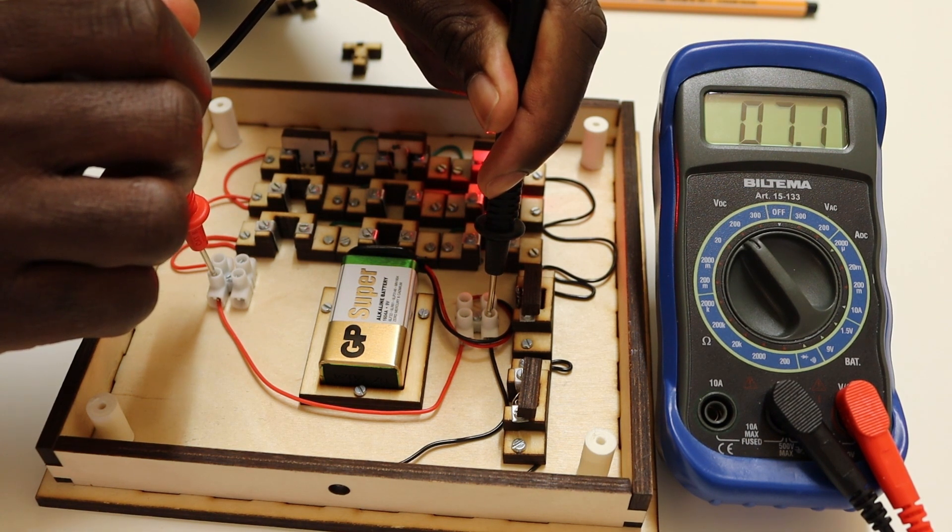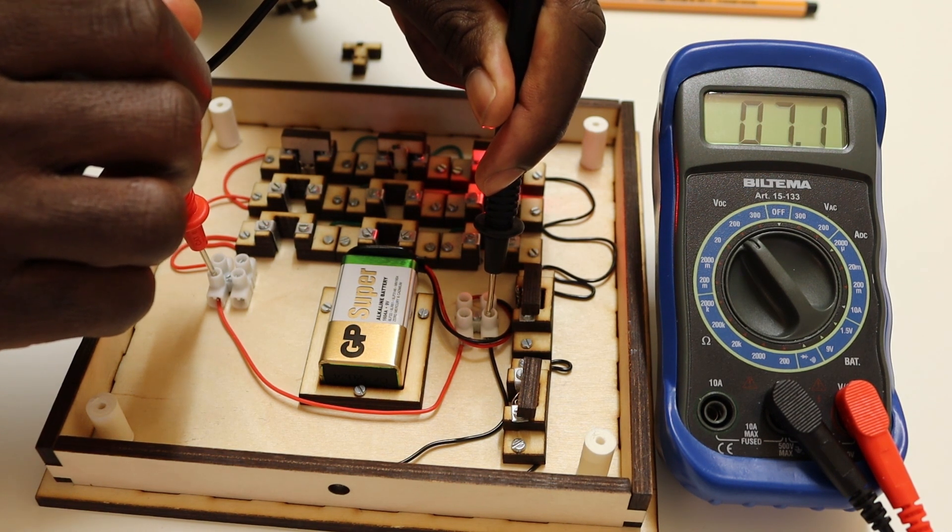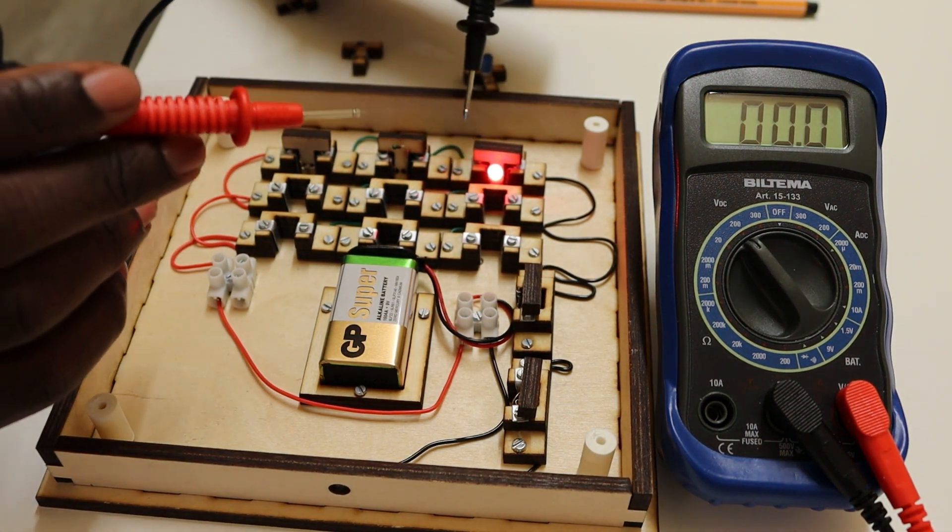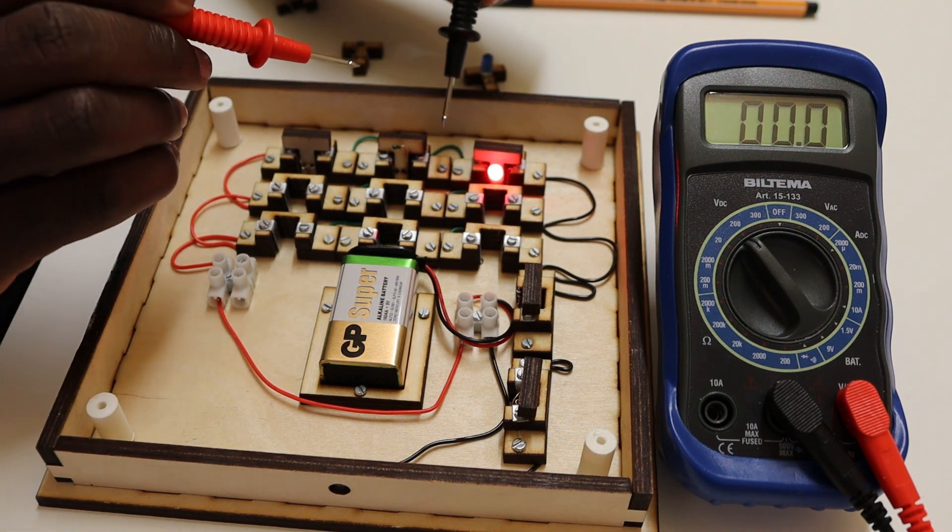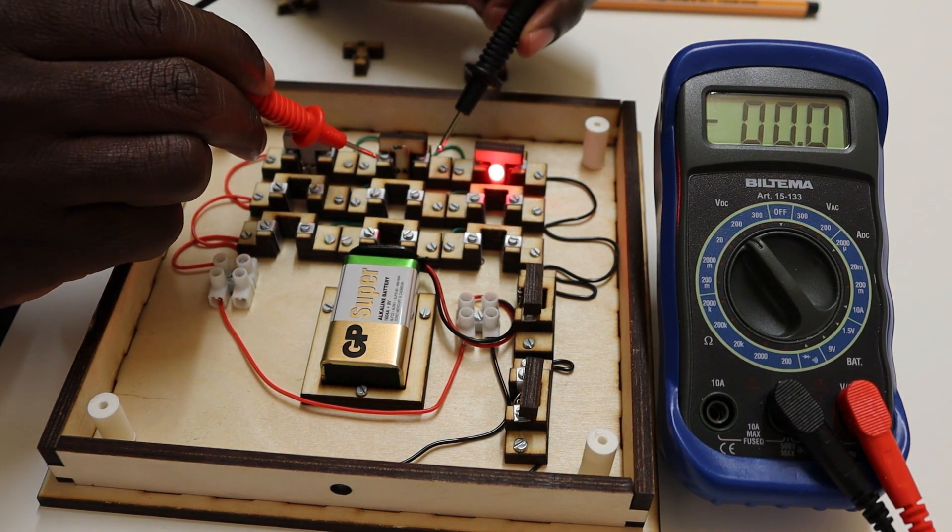Okay, we could measure several things. We could measure the voltage across the resistor, for example. So if this is the resistor, we could measure what is the voltage drop across this resistor.